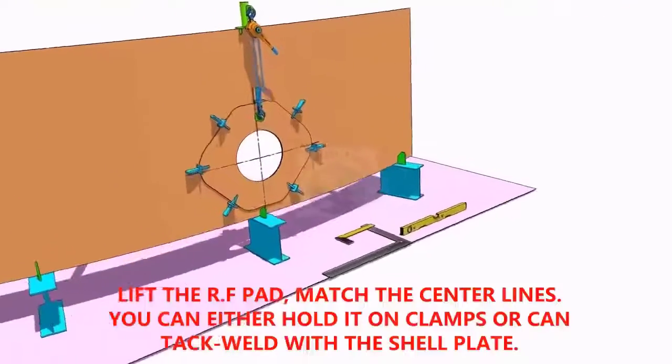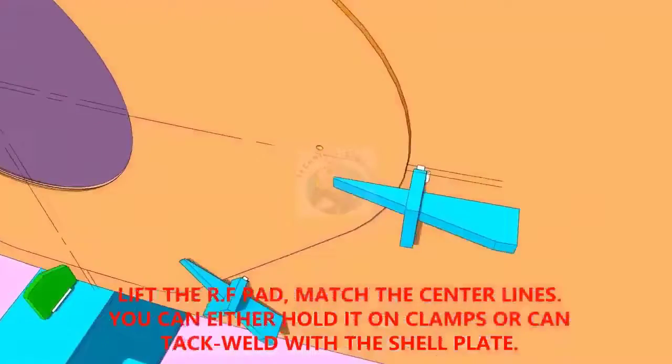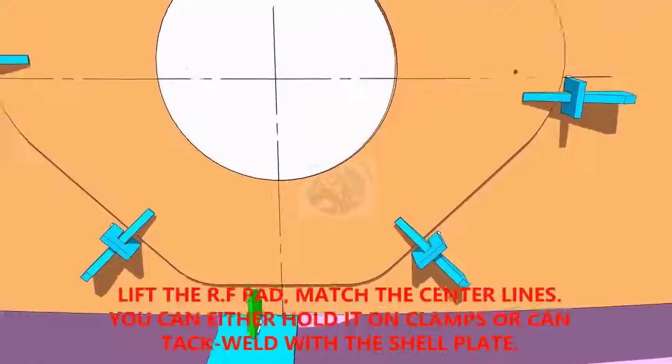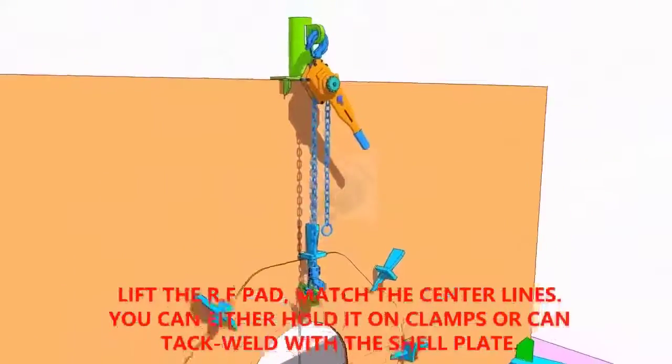TAC weld the reinforcement pad on the shell plate. You can either TAC weld directly on the shell or fix it with clamps as shown. Make sure the center lines on the shell plate and the pad are matching.